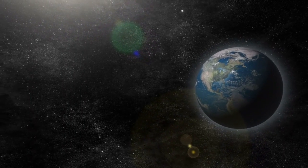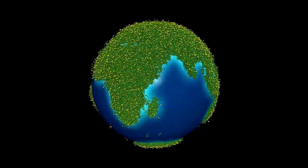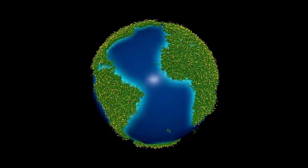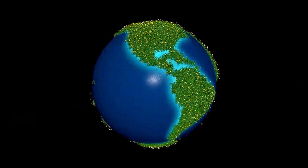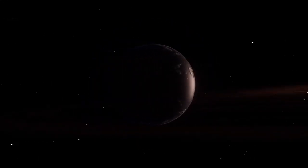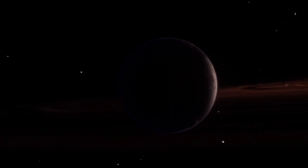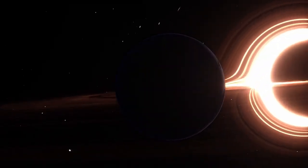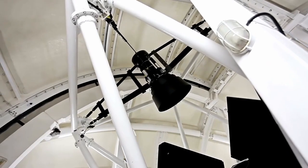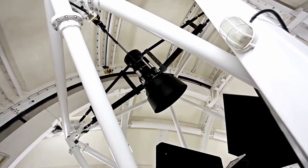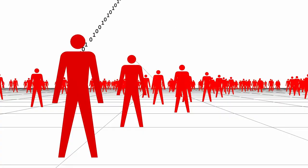For years, this small rocky world existed in the minds of scientists as a distant possibility detected only through faint signals, tiny wobbles in starlight and subtle dimming events. Now, for the first time in human history, we have a direct, incredibly detailed image of this alien planet.